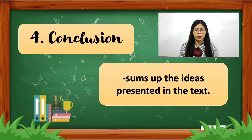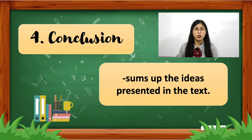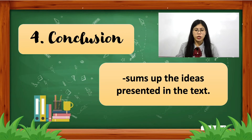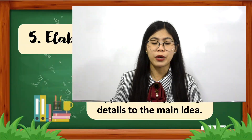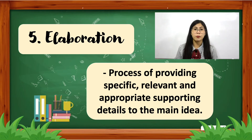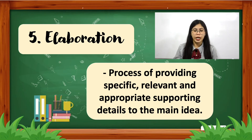Next, we have the conclusion. You must be able to write a satisfying conclusion — sum up the ideas presented in the text, and restate the main ideas or thesis in different words. You can also ask questions to prompt a response from your readers or ask their opinion on the presented information, offer recommendations, or share your opinions. Another component of good writing is elaboration — the process of providing specific, relevant, and appropriate supporting details to the main idea. A piece will not be effective if it does not elaborate on the topic. Elaboration must be done in the body of your text.